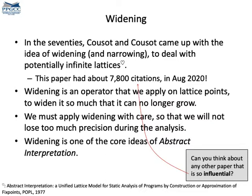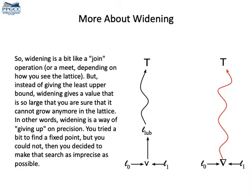The classic idea to deal with the problem of lattices of infinite height is due to Cousot and Cousot, who in 1977 published a paper about abstract interpretation — one of the most celebrated papers in the programming language literature. In that paper, they introduced the notion of widening. If the lattice has infinite height, we can apply widening to ensure that we reach a fixed point when traversing the lattice with monotonic functions, which ensures termination. Widening is like a meet or join operation that gives up precision to ensure termination: instead of moving up in the lattice by small steps, we go to a value so high that it will no longer change regardless of which transfer function we apply.